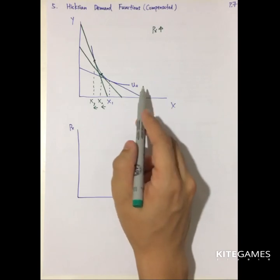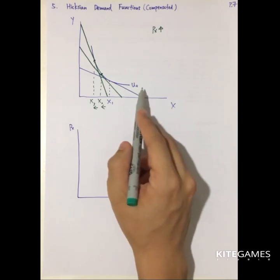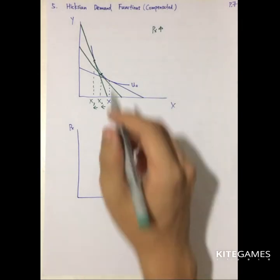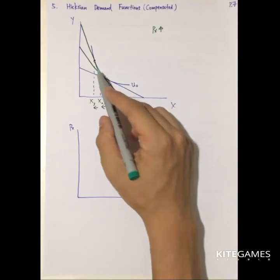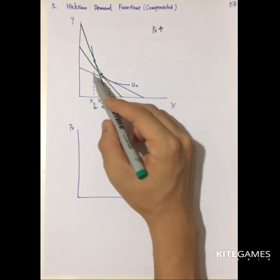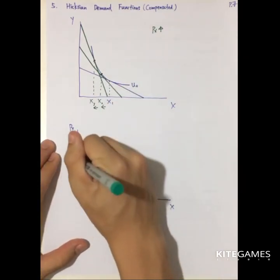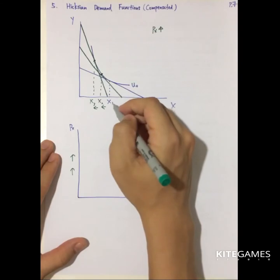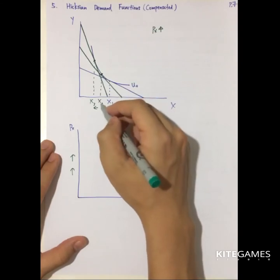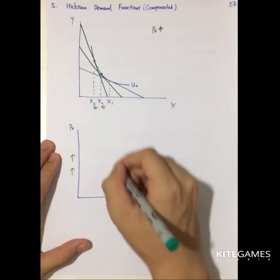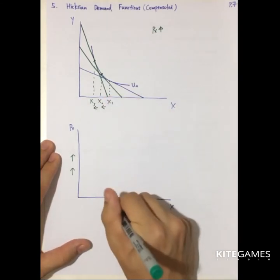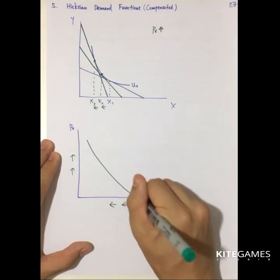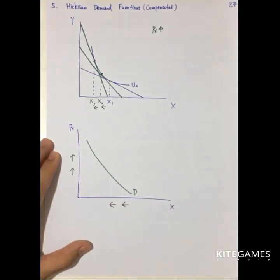The Hicksian demand function focuses only on the substitution effect. Again, you can show that when the price of X increases, the demand decreases from X1 to X2 to X3. Again, you can derive a downward sloping demand function.